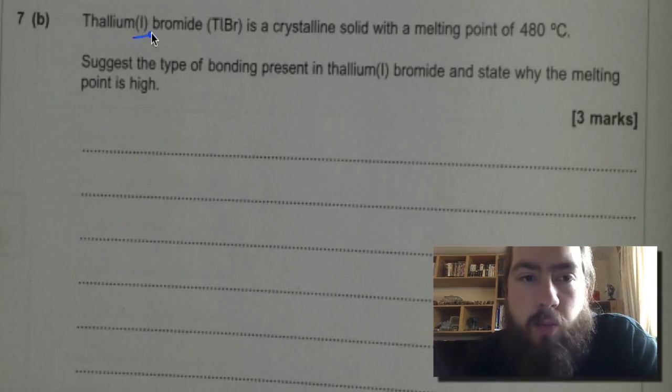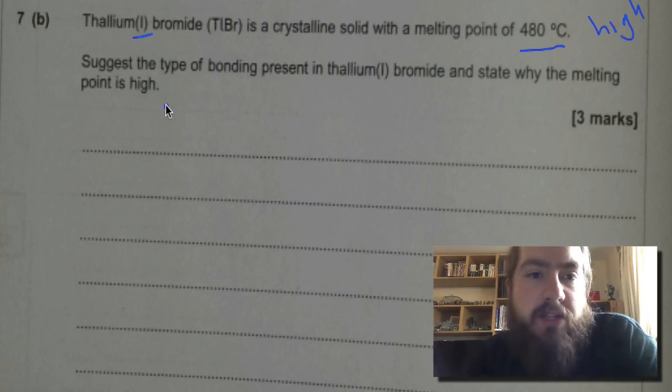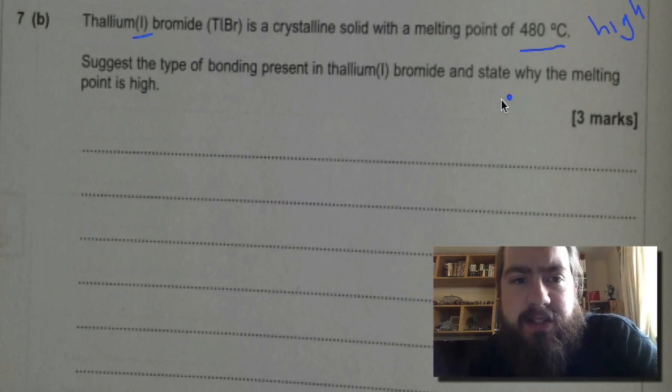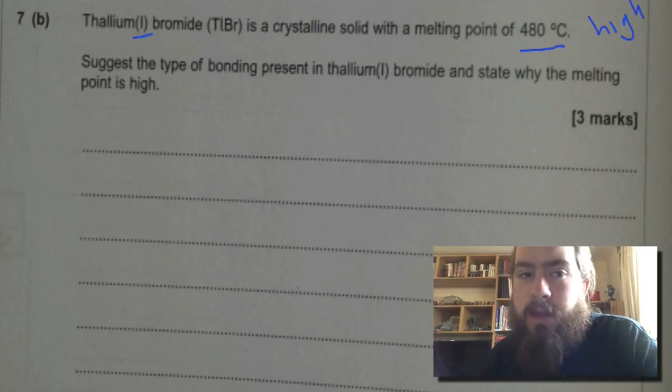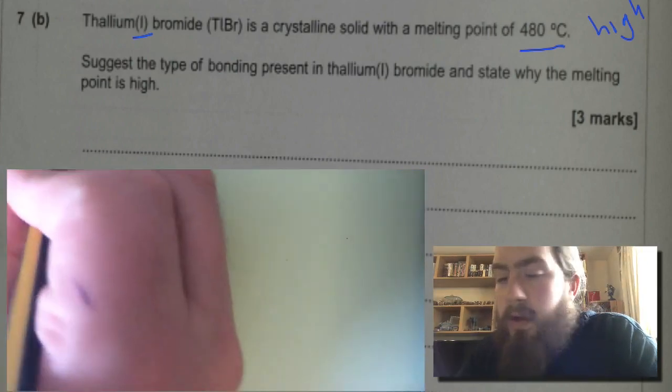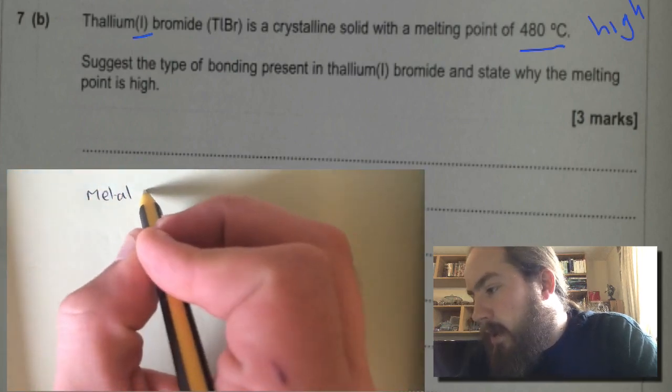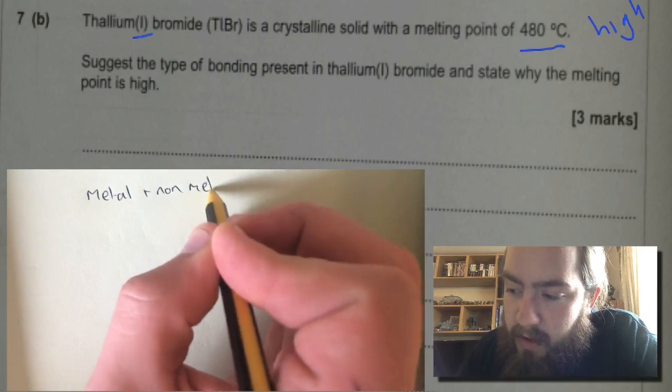Okay, 7 part B. Thallium 1 bromide, TlBr, is a crystalline solid with a melting point of 480. That's high. Suggest the type of bonding present in thallium bromide and state why the melting point is high. Now thallium is a metal. Bromine is obviously a group 7 non-metal. So our bonding is going to be ionic.